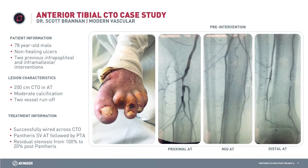Case number one is a 78-year-old male who presented with, as you can see from the pictures, a previous second digit amputation and dry gangrene on the dorsum of the second and third digits. He'd had two previous interventions below the knee, he re-occluded, and his wounds were getting worse, so we brought him in to perform an angiogram. You can see from the angiographic images on the screen that he had a long-segment anterior tibial artery chronic total occlusion.